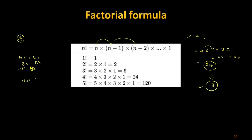So AX will be 0001. I push it into BX and then increment BX, making BX equal to 0002. Then I multiply 0001 by 0002. I can also do this in the reverse fashion — whichever logic is convenient for your implementation, you can use it. Multiple logic approaches are available in programming.